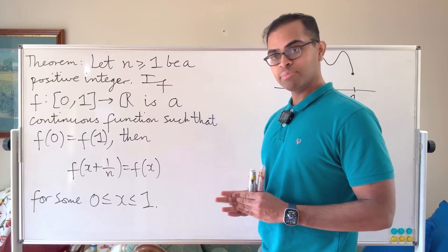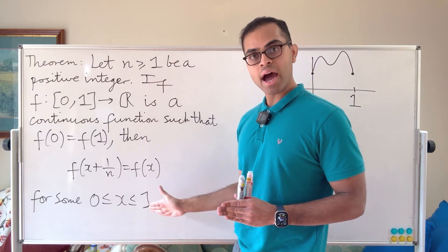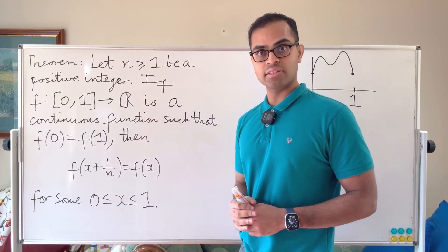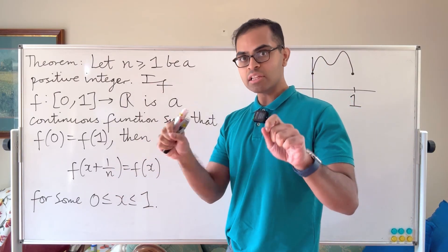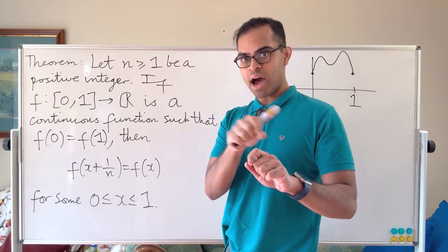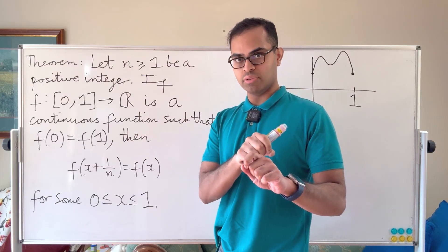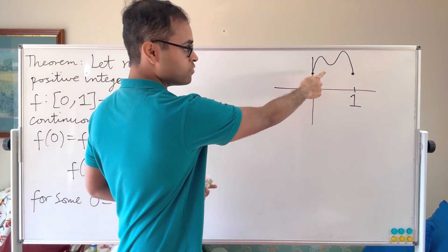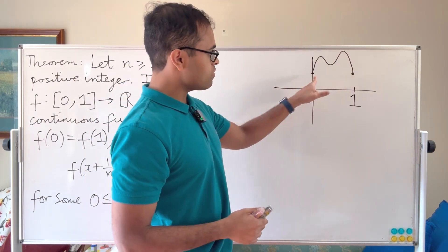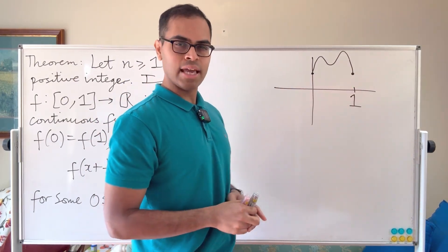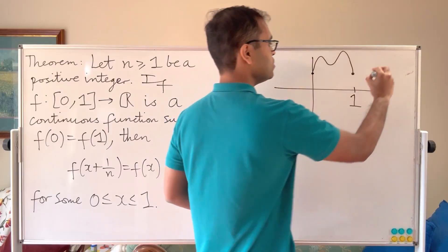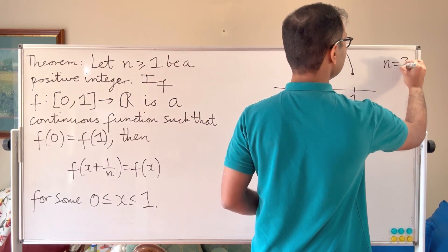There is always an x between 0 and 1 such that f(x + 1/n) is equal to f(x). So the two values of f match, and are 1/n apart in the x inputs. For example, you could have the graph of a function where its value at 0 and its value at 1 are the same. Let's take a value of n — for example, n equals 3.